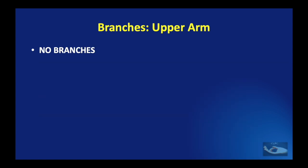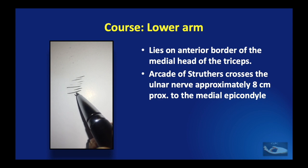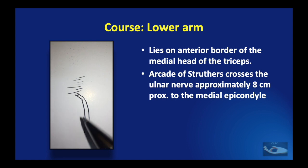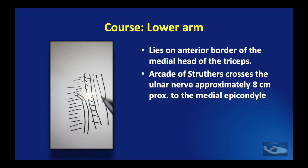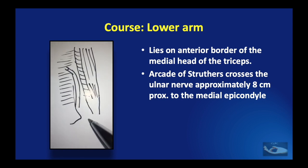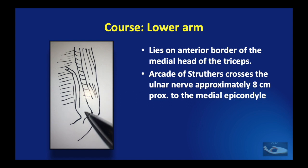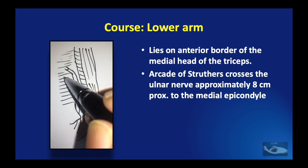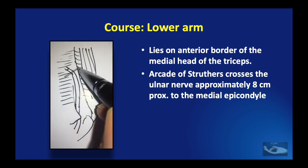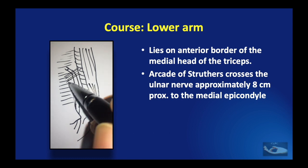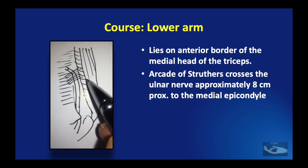The ulnar nerve does not give any branch in the upper arm. Once it enters the posterior compartment by perforating the medial intermuscular septum, it runs on the posterior surface of the intermuscular septum, anterior to the medial head of the triceps muscle. The nerve then runs toward the medial epicondyle of the humerus and the olecranon process of the ulna, where the triceps inserts. About 8 cm proximal to the medial epicondyle is the arcade of Struthers — the fascial band between the medial head of the triceps and the medial intermuscular septum — under which the ulnar nerve passes.